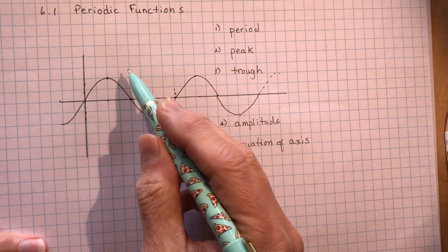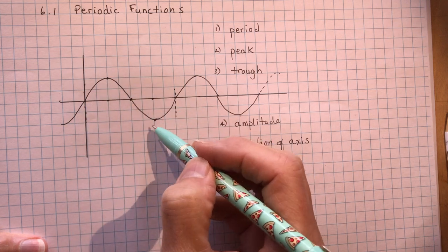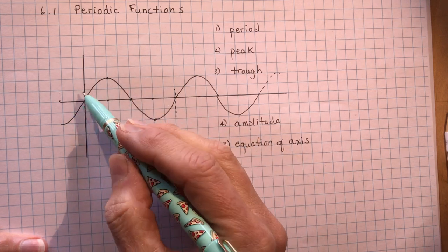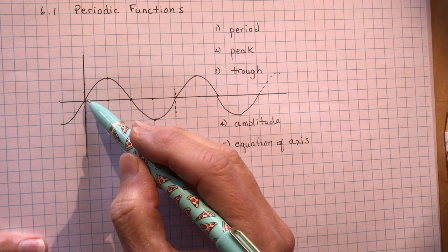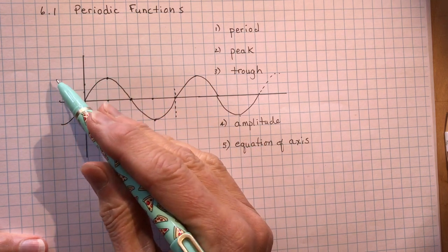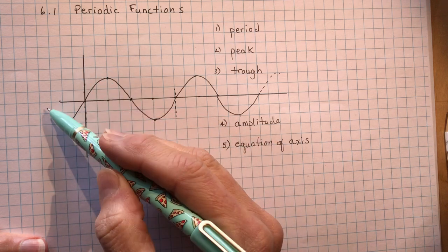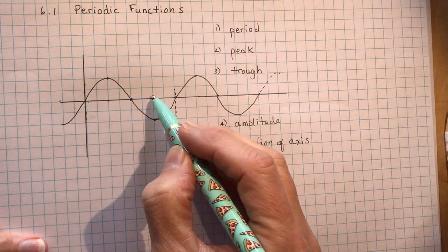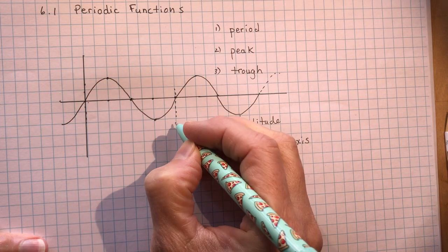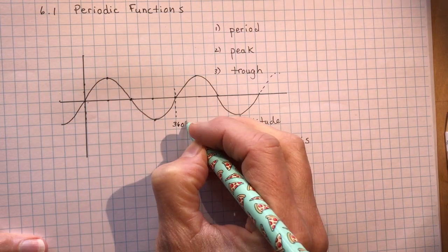And that should make sense to you because we've gone around in the last chapter talking about different angles as we moved the initial arm around to get to a terminal arm. We went around 360 degrees. And likewise for the sine function, this one complete cycle is going to be 360 degrees.